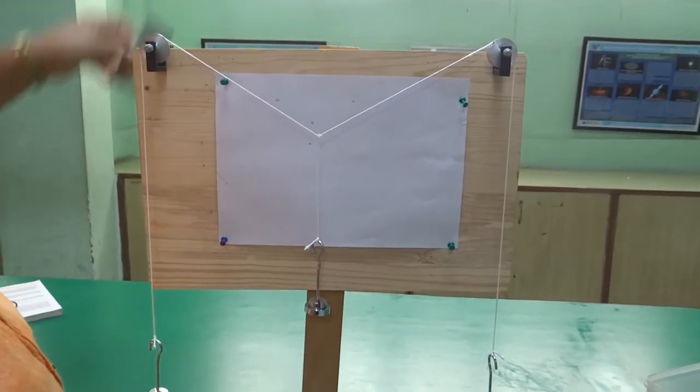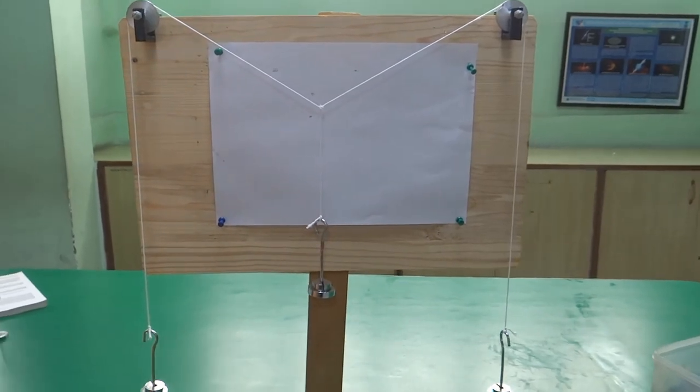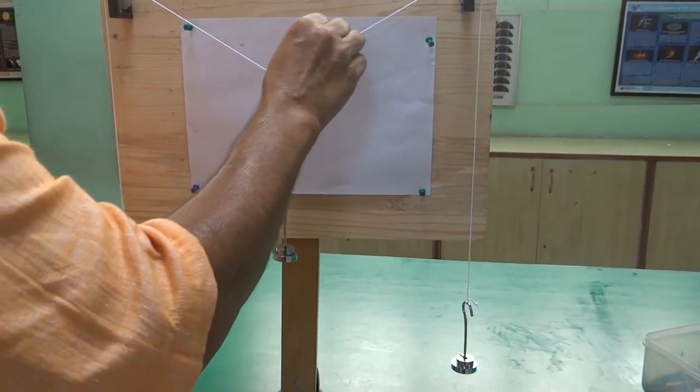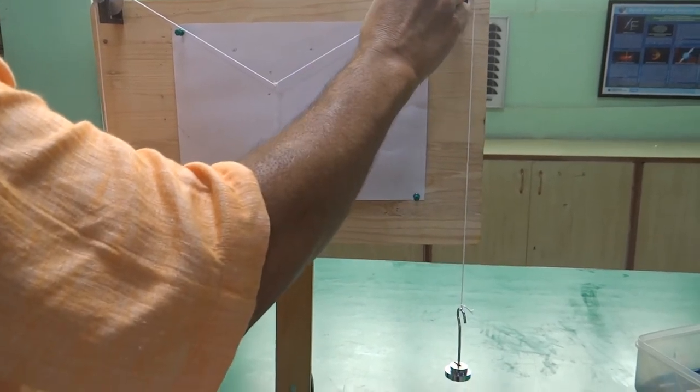Now you have seen 4 points on the white sheet. When we join these 2 points, this will give you the direction of force acting along, tension acting along this string.